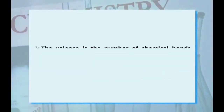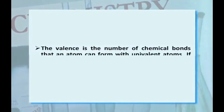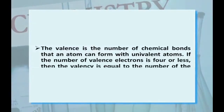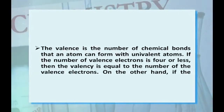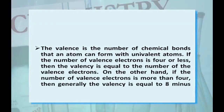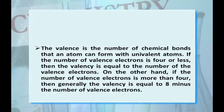Valency is the number of chemical bonds that an atom can form with univalent atoms. If the number of valence electrons is 4 or less, then valency equals the number of valence electrons. If the number of valence electrons is more than 4, then valency equals 8 minus the number of valence electrons.